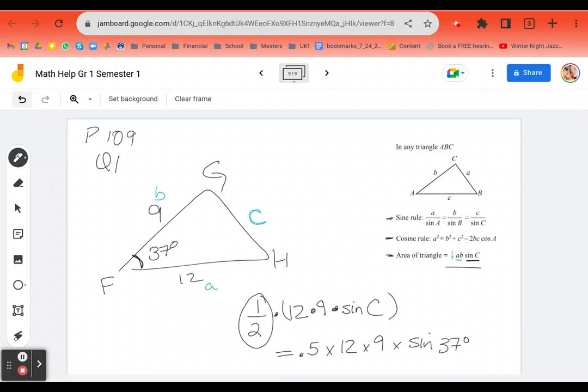And it asks for three significant figures. And that equals 32.498. So I'm rounding up. So I'm going to get 32.5. And that's my answer.